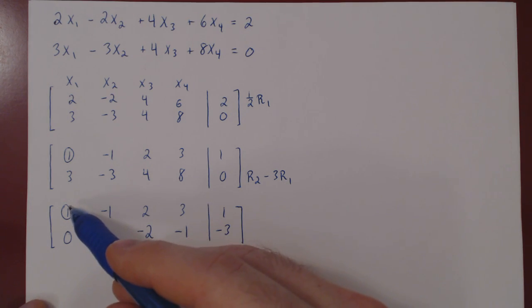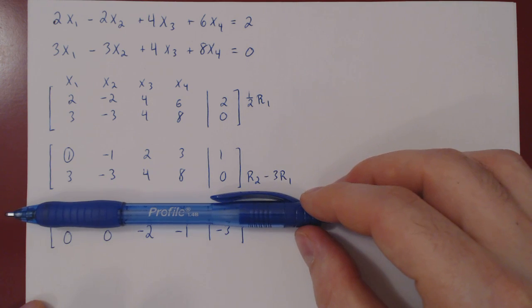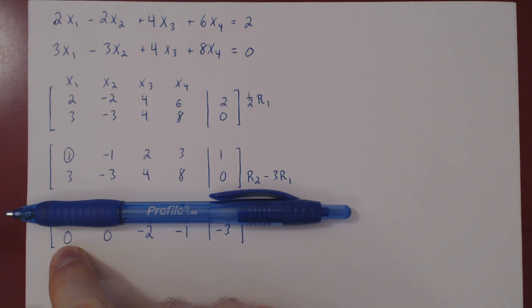So we have our first leading one. We've killed all the entries below it. So we ignore that row, and we repeat. We can't get the leading one here, neither here. Here's our first non-zero entry. The only way to turn this into a leading one, as it is a single entry, is to multiply the row by negative 1 half.